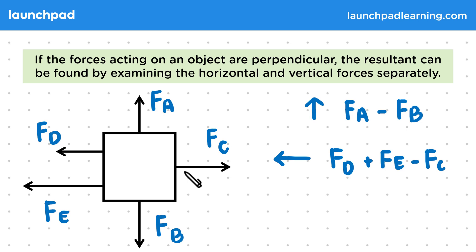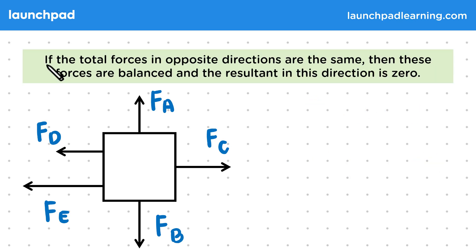So is there a situation where the resultant force will only be in one of these directions? Well, if the total forces in opposite directions are the same, then these forces are balanced and the resultant in this direction is zero.